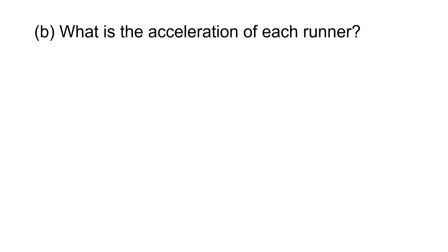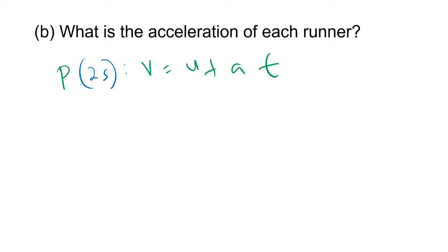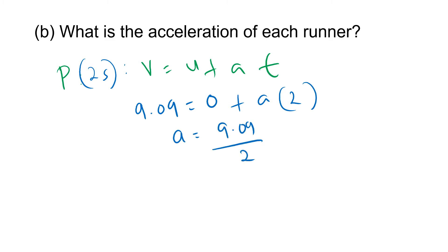Question b asks for the acceleration of each runner. For runner P, we use v = u + at. We already know v-max = 9.09, u = 0 (starting from rest), and t = 2 seconds — since acceleration only happens from 0 to 2 seconds. So a = 9.09 ÷ 2 = 4.55 ms⁻².